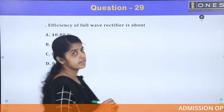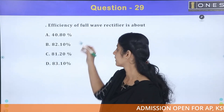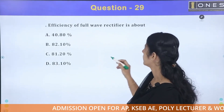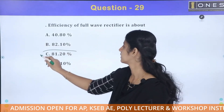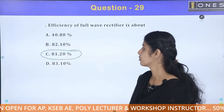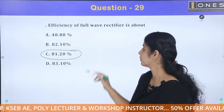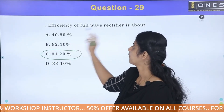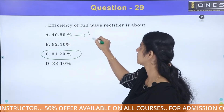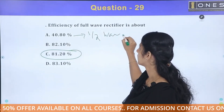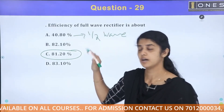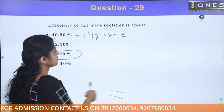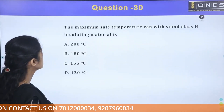The efficiency of a full wave rectifier — what is it? The answer is 81.2%. What is the efficiency of a half wave rectifier? The half wave rectifier efficiency is approximately 40.6%.